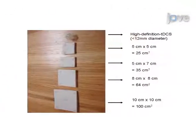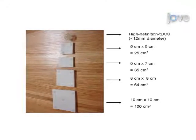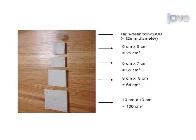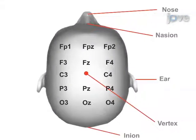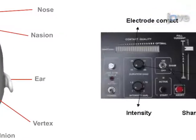The second step of the procedure is to prepare the electrodes using the size and type appropriate for your experiment. The third step of the procedure is to place the electrodes properly on the chosen site of stimulation.